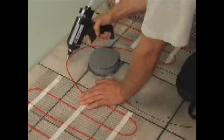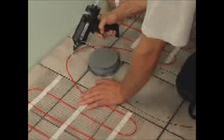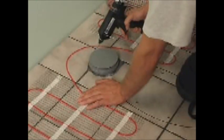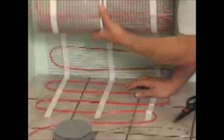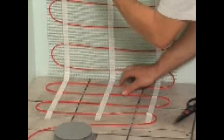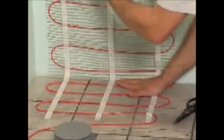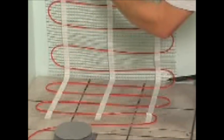To get around obstacles such as drains or toilets, loosen the cable from the mat and glue it to the floor with hot melt glue. Just make sure that the cable isn't damaged by screws or other objects which are drilled into the floor later on.